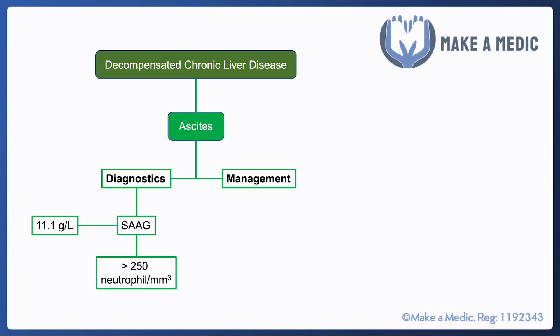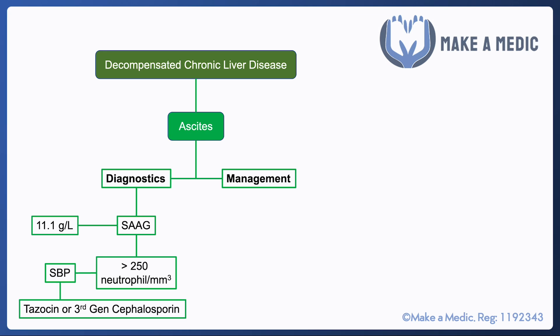Another parameter we are interested in is the neutrophil count. If there are more than 250 neutrophils per millimetre cubed, that is suggestive of spontaneous bacterial peritonitis — an infection of the ascitic fluid. This needs to be managed promptly because patients can become very unwell very quickly, and is generally managed using either tazocin or a third-generation cephalosporin.